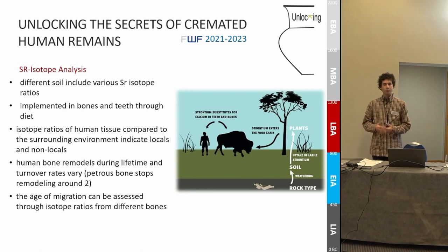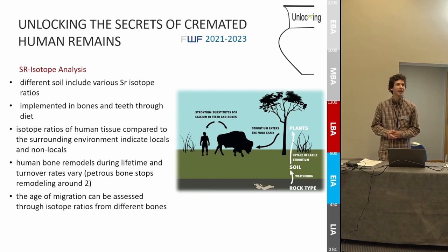Data from strontium isotope analysis is instrumental to detect individuals who migrated to the Treisen Valley. Different kinds of soil include various strontium isotope ratios, which are incorporated by plants, the plants are eaten by animals, and strontium becomes part of our bones and teeth for diet. Isotope ratios of human tissue compared to the surrounding environment indicate locals and non-locals.